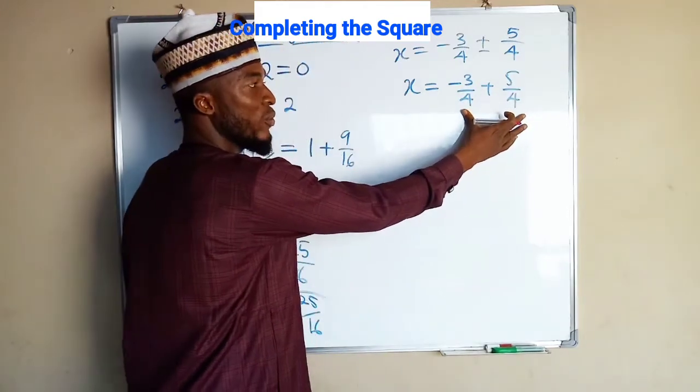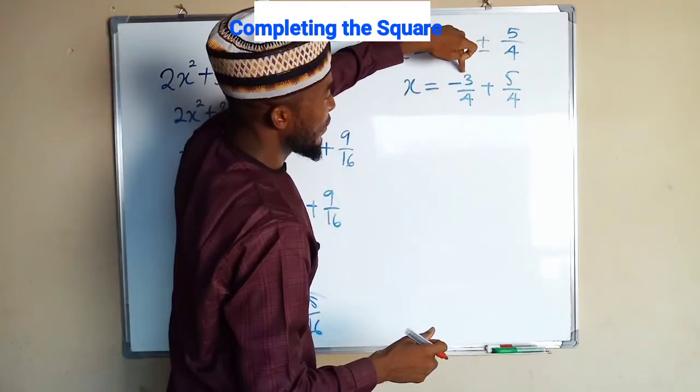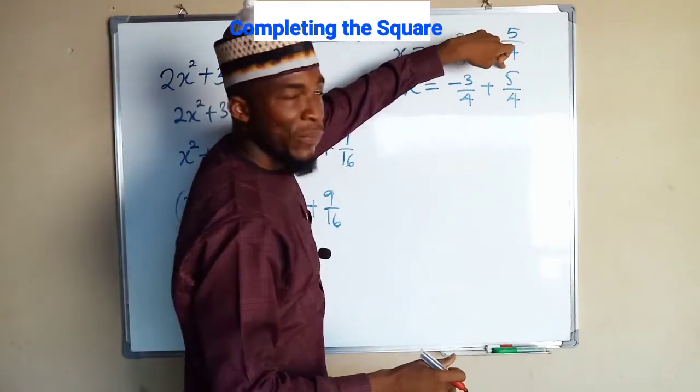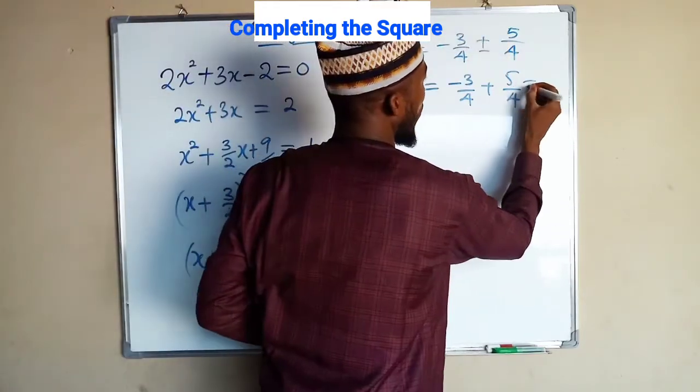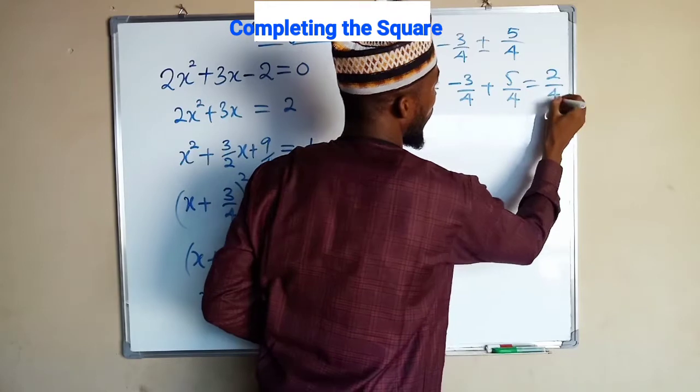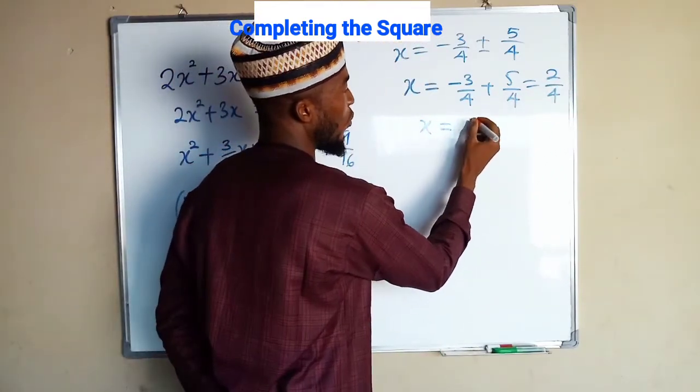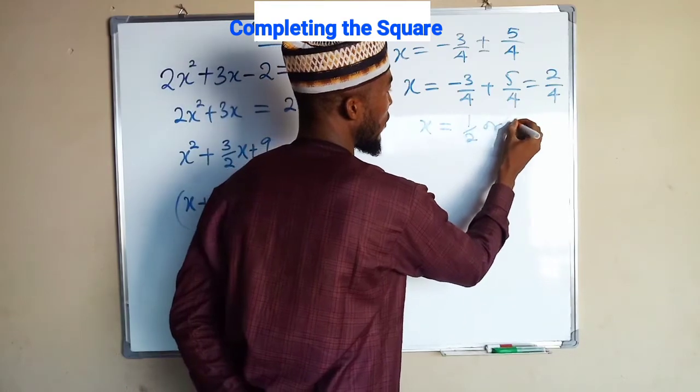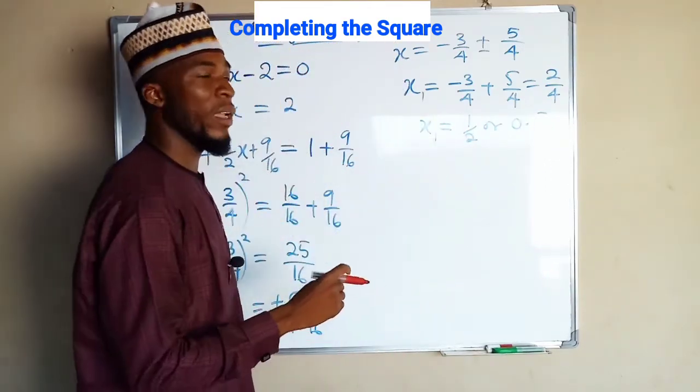They have common denominator, so we can add the numerators together. Negative 3 plus 5 is going to make it positive 2 over 4. Positive 2 over 4 is equal to 1 over 2 or 0.5. So you can see this is our first solution, x1.